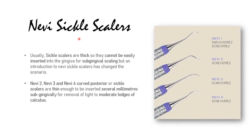The Navy sickle scalers were introduced because regular sickle scalers are thick and cannot be easily inserted into the gingiva for sub-gingival scaling. The Navy sickle scaler changed this scenario. There are four types: Navy 1, 2, 3, and 4. The Navy 2, 3, and 4 posterior sickle scalers are thin enough to be inserted several millimeters sub-gingivally for removal of light to moderate calculus deposits.